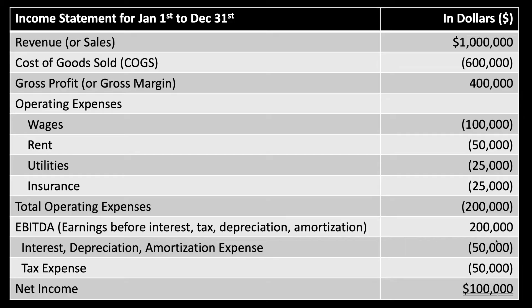Once we've gotten down to total operating expenses, the next number that comes up is EBITDA — E-B-I-T-D-A. Business folks often say it like "EBITDA." This refers to our earnings before interest, tax, depreciation, and amortization. This is essentially what our operating profit is — another lay term for that phrase.